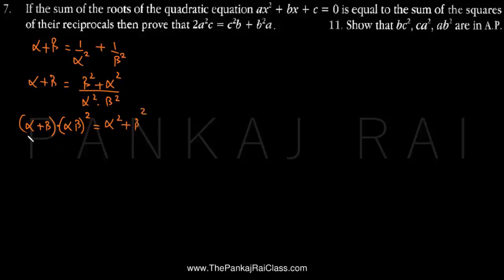Now, alpha plus beta is the sum of roots, which is given by −b/a, and alpha·beta is the product of roots, given by c/a. But what about alpha squared plus beta squared? Let us see about that.